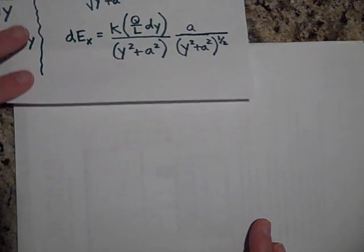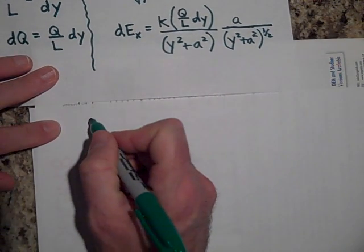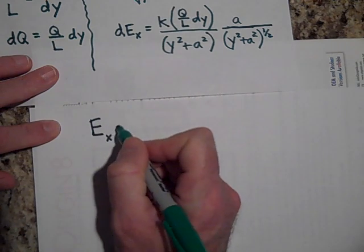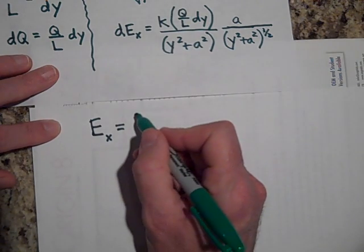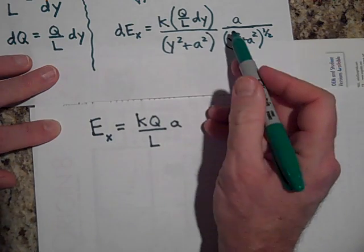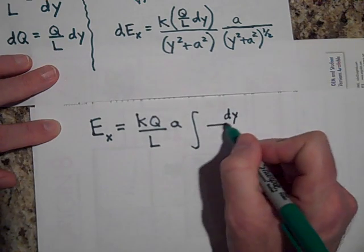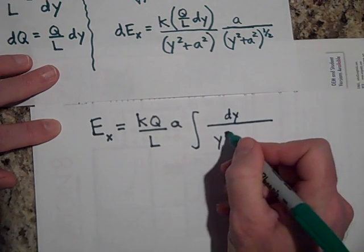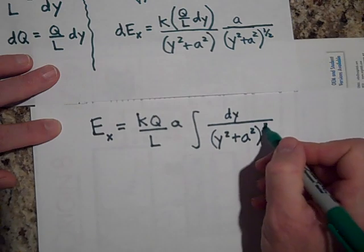Now that may look like a really miserable integral to do, but let's just take a look. I'm going to say the total electric field in the x direction, since it's the only one that lasts, is going to be equal to the integral. I'm going to pull out all the constants first. Here's a constant k is a constant, Q over L is a constant, and so is a. Then all I have left is dy over y squared plus a squared, and when you multiply these together it's to the three halves power.